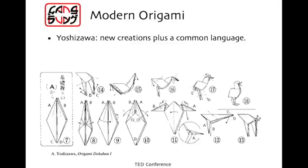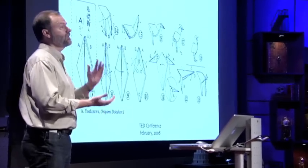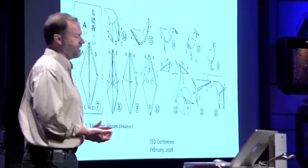And that might have been the case, but in the 20th century, a Japanese folder named Yoshizawa came along, and he created tens of thousands of new designs. But even more importantly, he created a language, a way we could communicate, a code of dots, dashes, and arrows. Harkening back to Susan Blackmore's talk, we now have a means of transmitting information with heredity and selection, and we know where that leads.